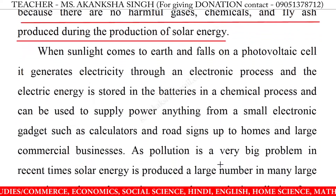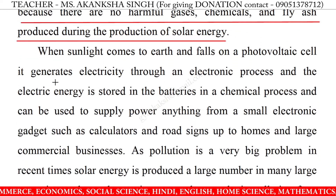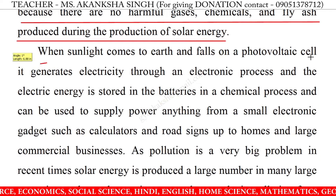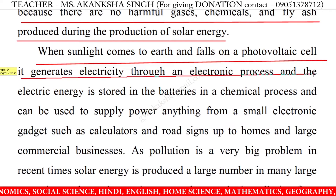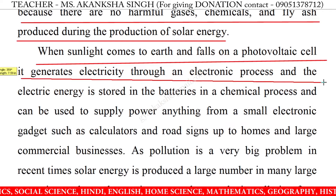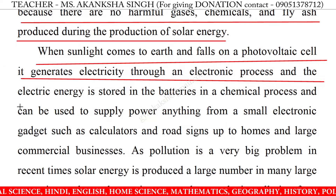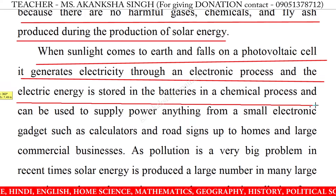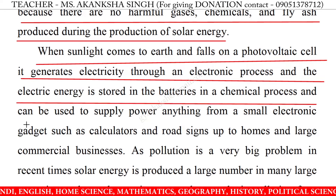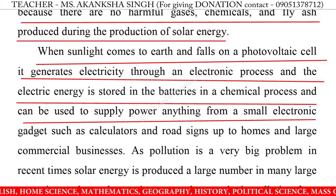When sunlight comes to Earth and falls on a photovoltaic cell, it generates electricity through an electronic process and the electric energy is stored in the batteries in a chemical process.